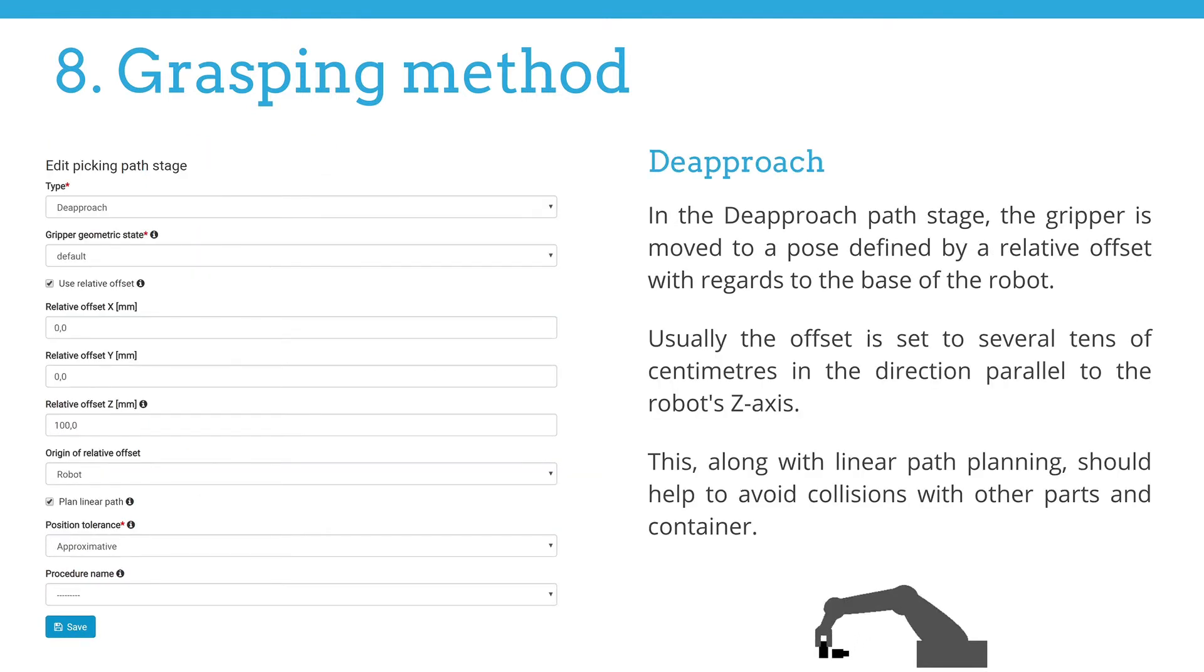Now we need to configure a way back. The first path stage will be the so-called de-approach. While with the approach stage we aim to move linearly in the coordinate system of the object, parallel to the z-axis, for de-approach we just want to go straight up, the objective being to move in parallel to the sides of the bin. This could be associated with the coordinate system of the robot itself. The robot coordinate system is located in the base of the robot, with the z-axis pointing in a positive direction up and the x-axis usually in the direction of the bin. In terms of values, please use the checkbox Use relative offset. In the drop-down list called origin of relative offset select robot as a value. Fill out the desired value in relative offset Z with the desired rise in millimeters.